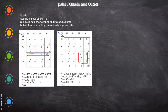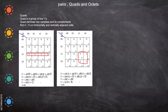A quad is a group of four ones. It can be arranged horizontally, vertically, or in a 2×2 block — any group of four adjacent cells. For example, given the combinations A,B,C-bar,D-bar / A,B,C-bar,D / A,B,C,D / A,B,C,D-bar, you place a 1 in each respective position on the K-map, and then you can form a quad.